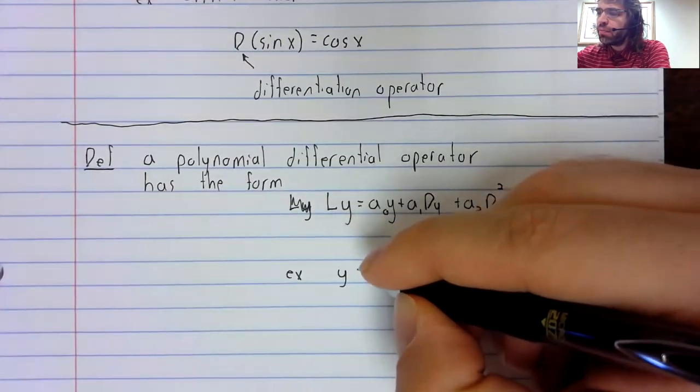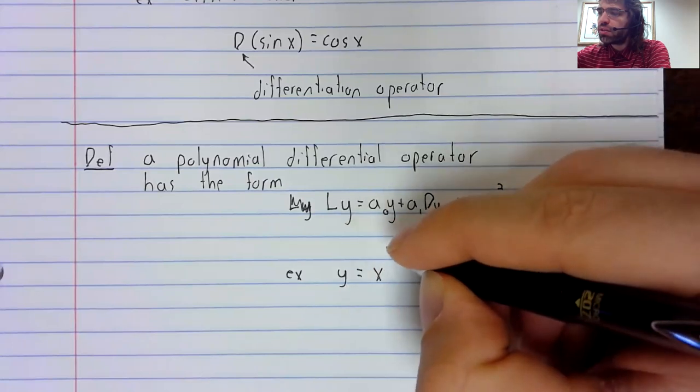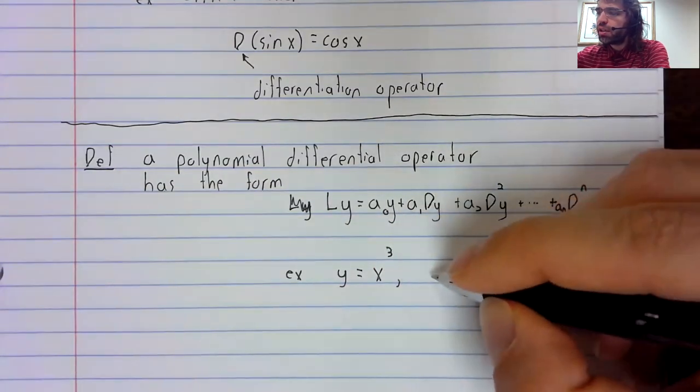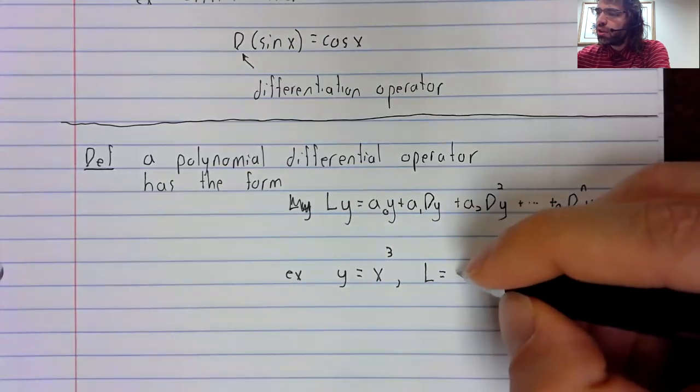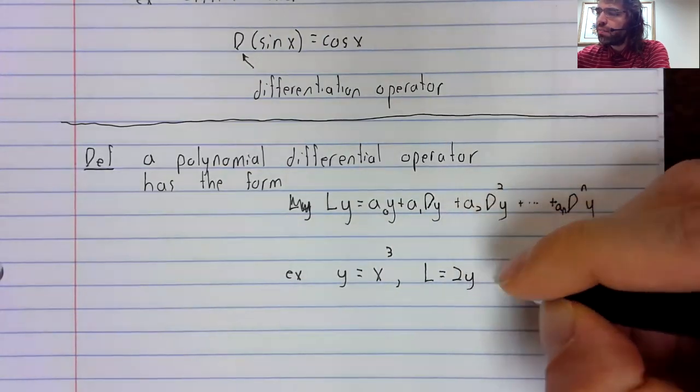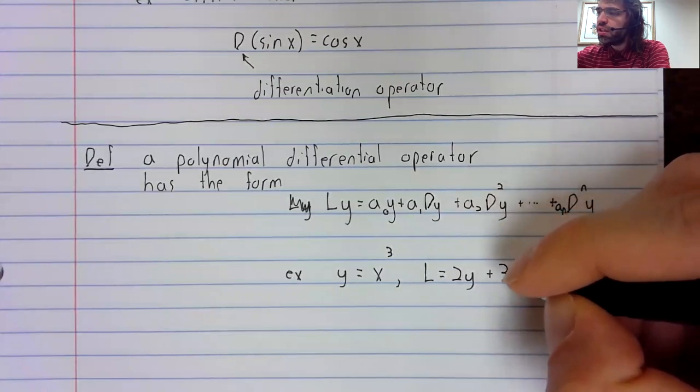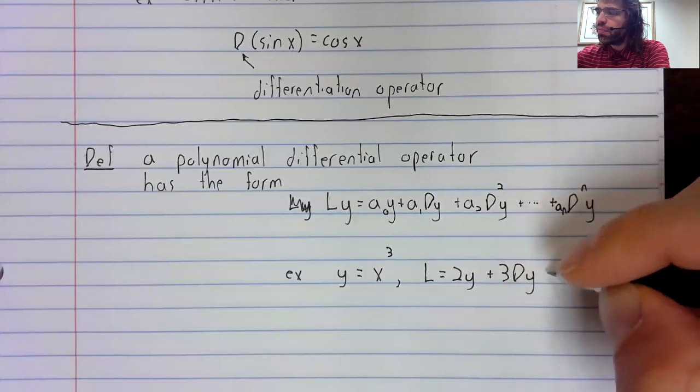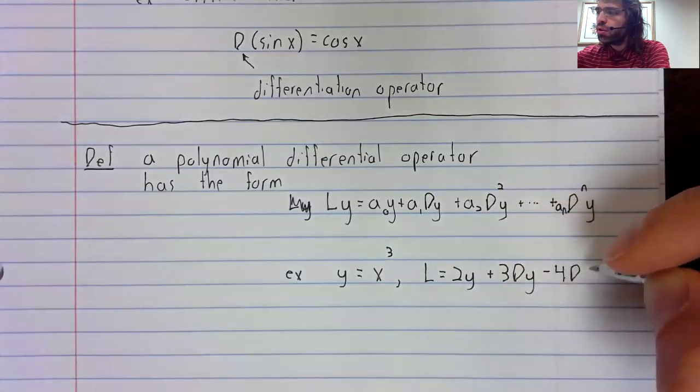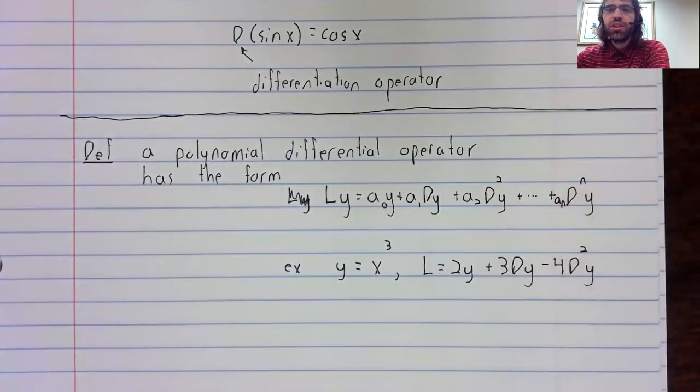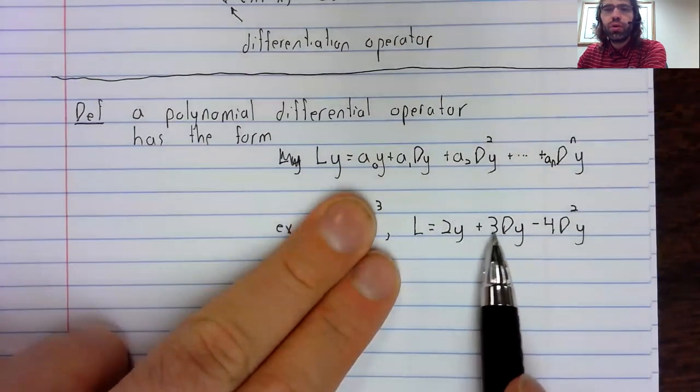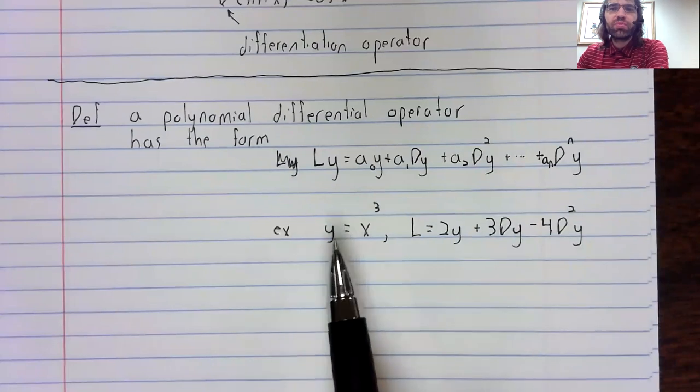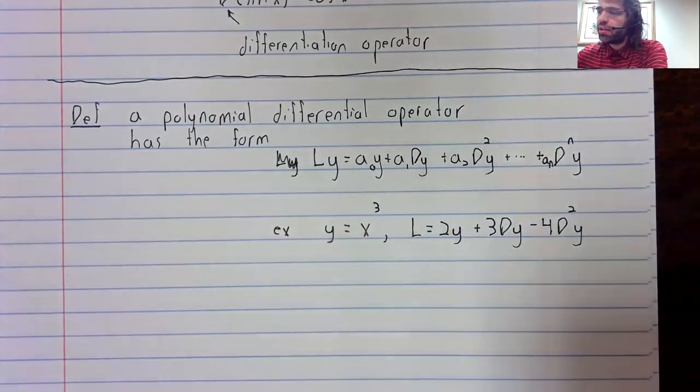Let's say y equals x cubed, and let's say L equals 2y plus 3Dy minus 4D squared y. So we have a polynomial differential operator, and we have some specific function we'll apply this to.